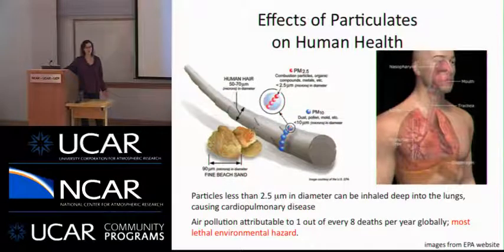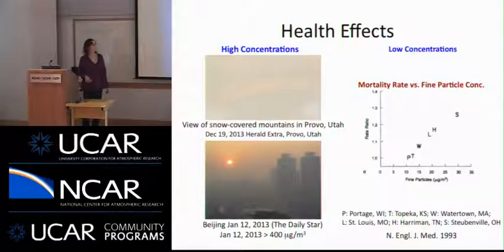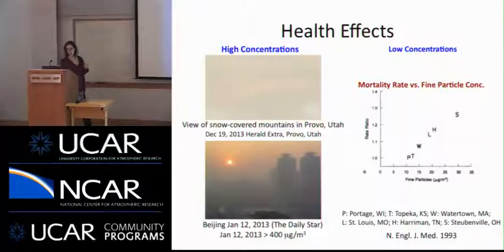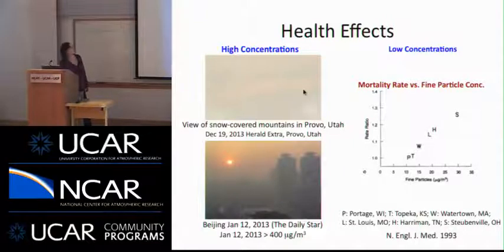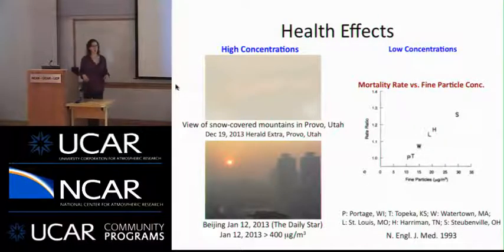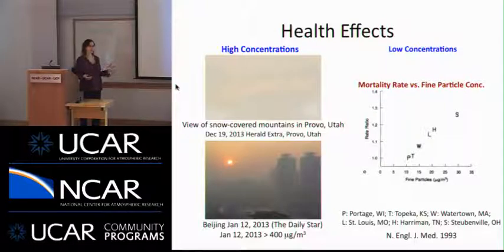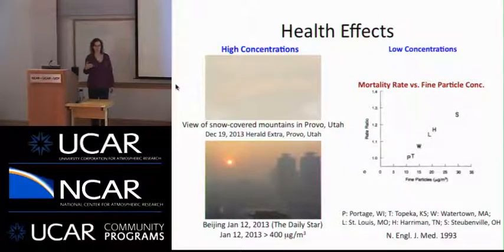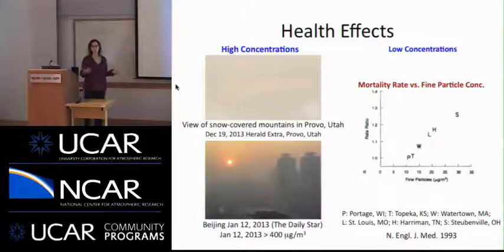We can see the effects of particles on human health both at high and low concentrations. I'm showing two pictures of high concentrations. The first is snow-covered mountains in Provo, Utah, where you can barely see anything at all. The bottom picture is Beijing last winter, where particulate levels were greater than 400 micrograms per meter cubed. The World Health Organization wants us to keep particulate levels less than 25 micrograms per meter cubed, and anything above 100 is considered extremely dangerous.